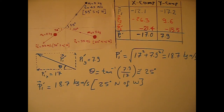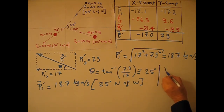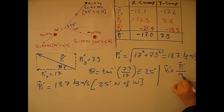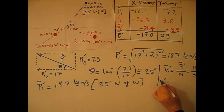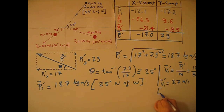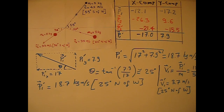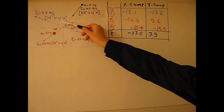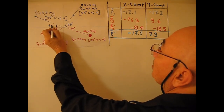This is the momentum of the first marble just after the collision. To find the velocity, v1 prime equals momentum over mass: momentum is 18.7, mass is 5 kilogram, so v1 prime equals 3.7 meters per second. This is the velocity of the first marble just after the collision, directed at 25 degrees.